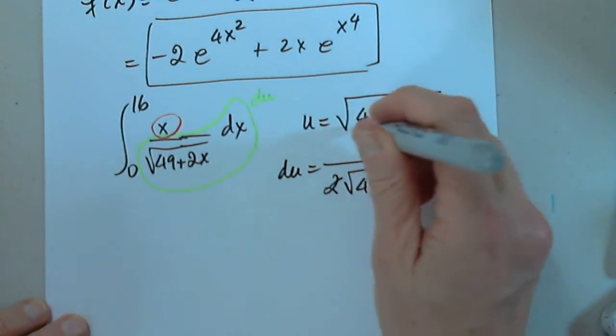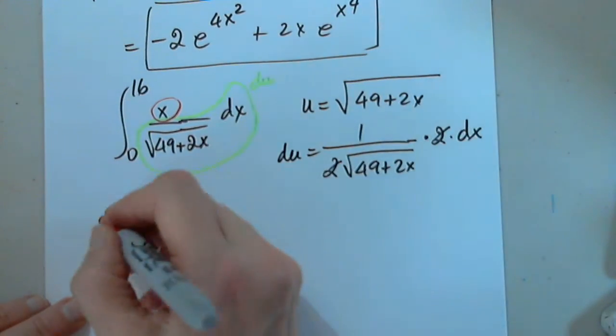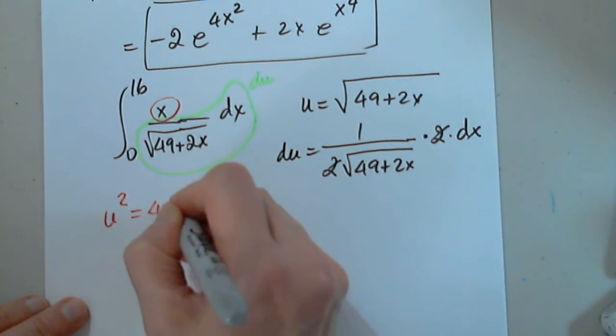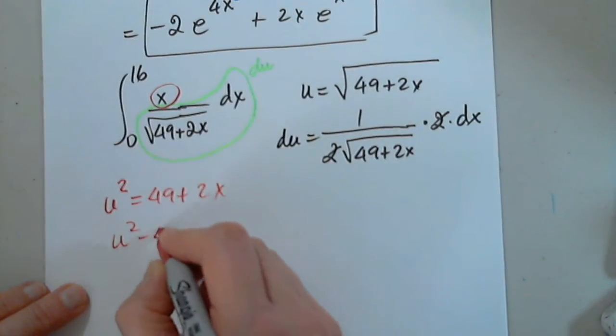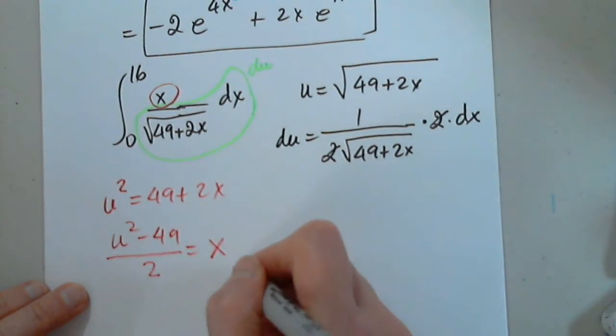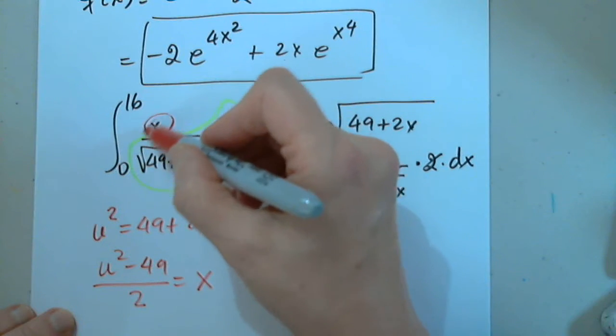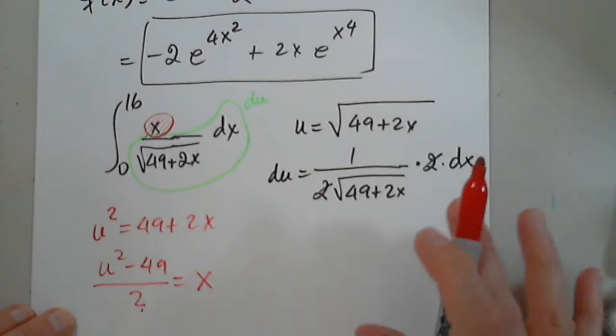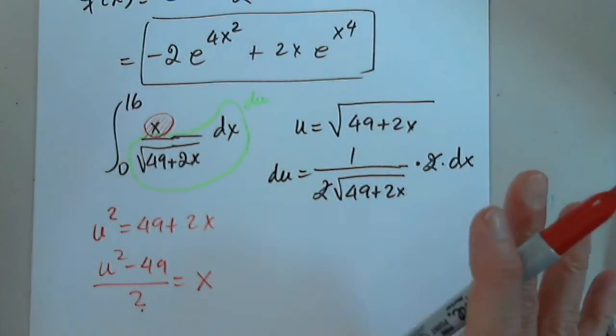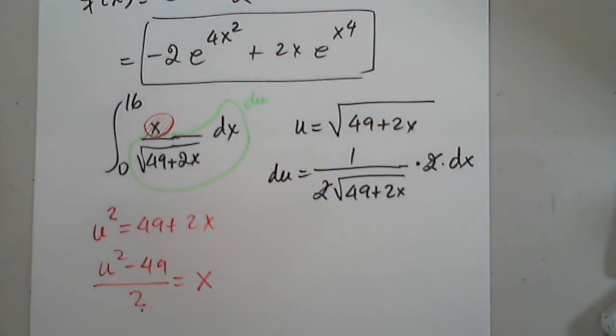So let's see what happens when I square both sides. I have u squared equals 49 plus 2x, and I can solve this for x and plug that in. Move 49, divide by 2, and that's my x, which means that this piece is u squared minus 49 over 2. I'm happy with my substitution, so I can continue.